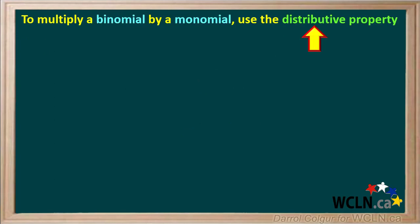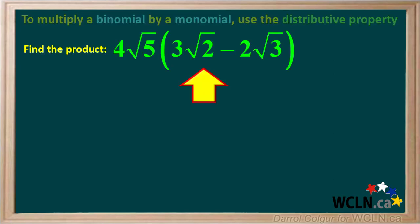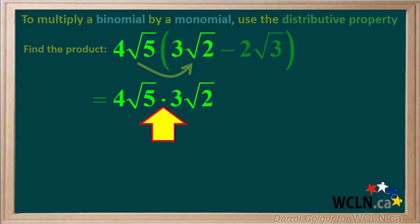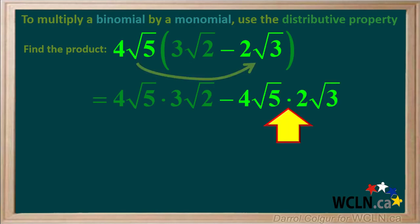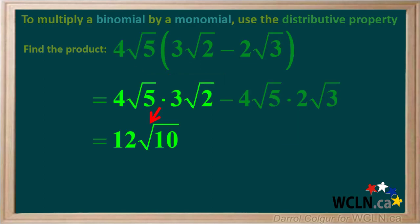To multiply a binomial by a monomial, use the distributive property. We are asked to find the product 4 root 5 times the quantity 3 root 2 minus 2 root 3. We multiply 4 root 5 times 3 root 2 to give us the first term, and 4 root 5 times negative 2 root 3 to give us the second term. 4 root 5 times 3 root 2 is equal to 12 root 10.